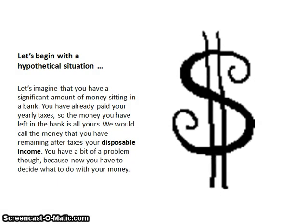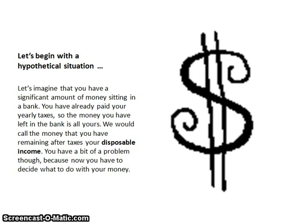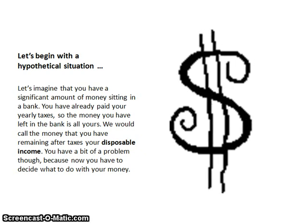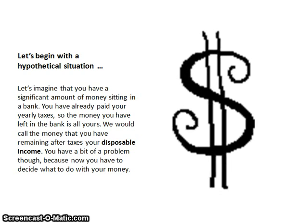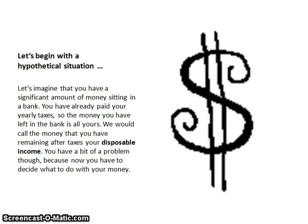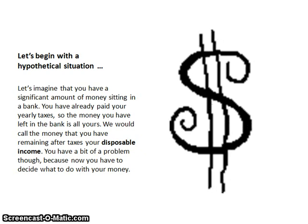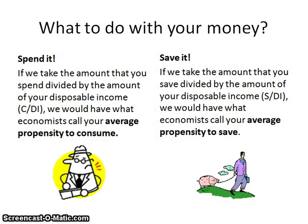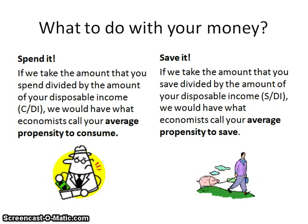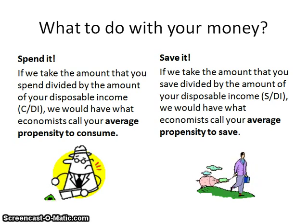Let's imagine that you've got a significant amount of money sitting around in a bank account. If you've already paid your taxes, the money left in the bank is all yours to do with whatever you want. We would call that amount of money remaining after taxes your disposable income, and we use the abbreviation DI to designate that. Now you have to decide what to do with your additional money.